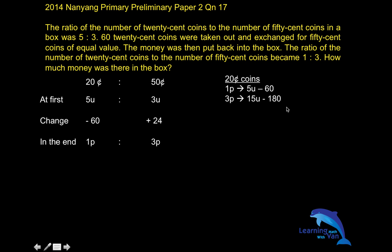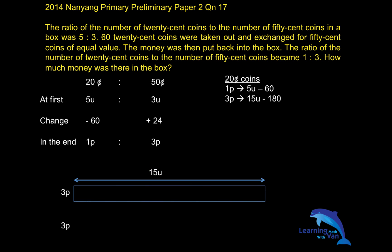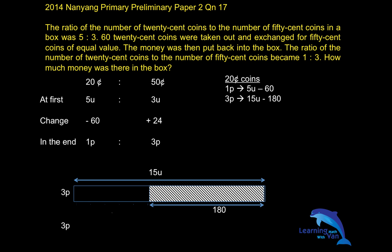Now let's use a model to help us deal with the negative and positive signs. I'll show you how it can be depicted. Three parts — they are both the same — but I have two ways to express it: one is 15u minus 180, which leaves three parts; the other expression is the same three parts expressed as 3u plus 24.